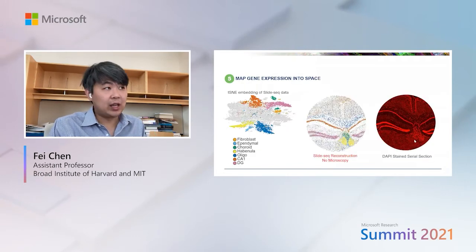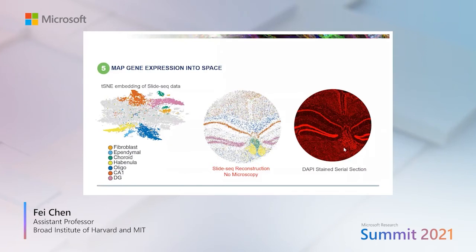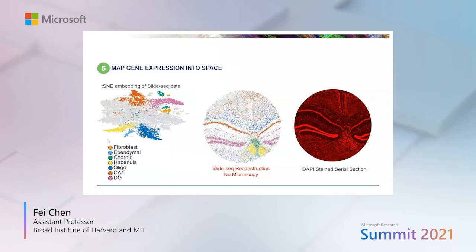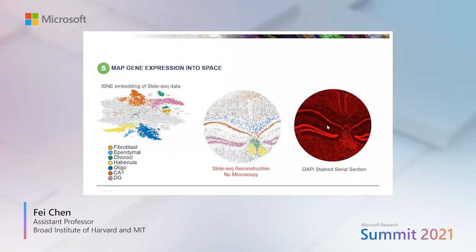The data has very similar structure to single-cell data, so we can apply similar computational tools such as dimensionality reduction and clustering. We performed Slide-seq on the mouse hippocampus: we clustered gene expression profiles in an unsupervised way and colored beads by cell type as defined by the genes expressed in each cluster. Placing beads back in the array by assigned cell type, we can reconstruct the tissue architecture — recapitulating distinct layers including CA1 neurons, the dentate gyrus, and oligodendrocytes separating the cortex from the hippocampus — without any microscopy. We've effectively turned the sequencer into a microscope.